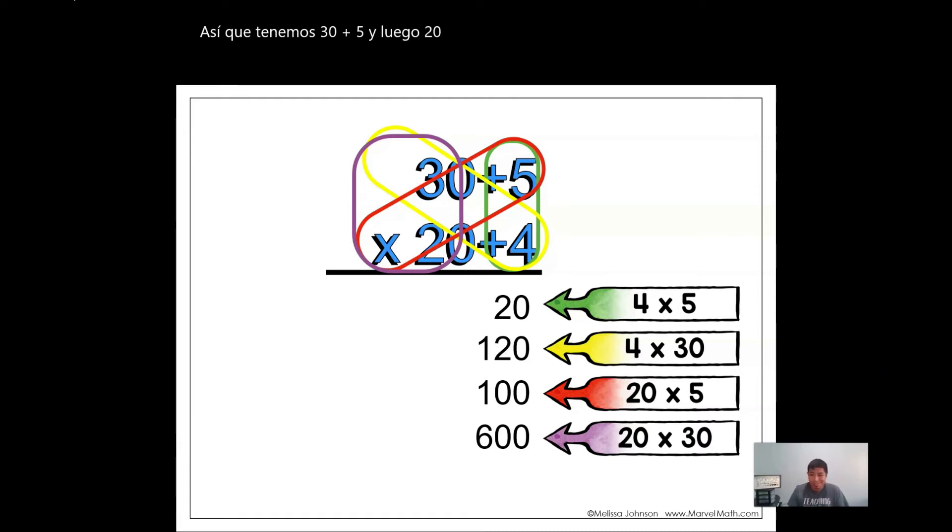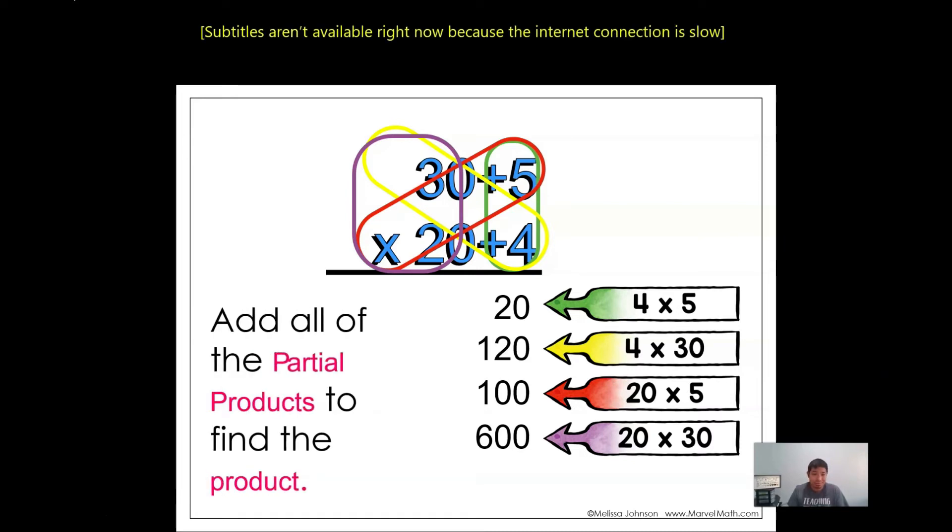And then lastly, we just gotta add up all these numbers. Add all the partial products to find the product, which equals 840.